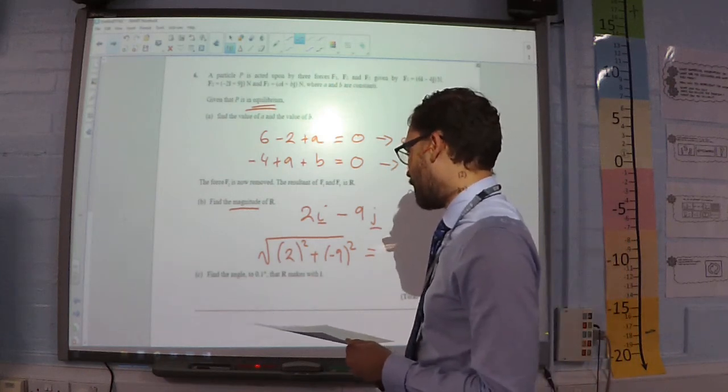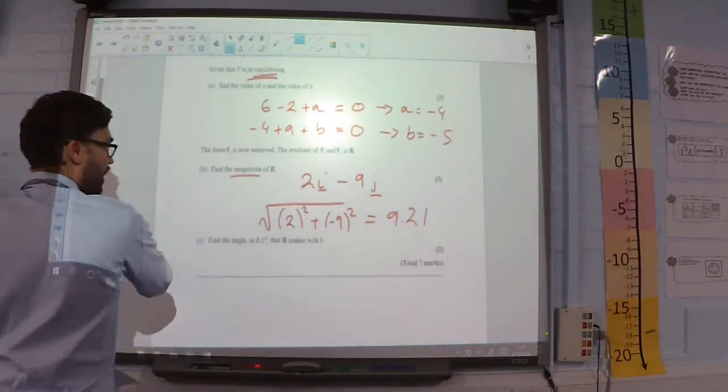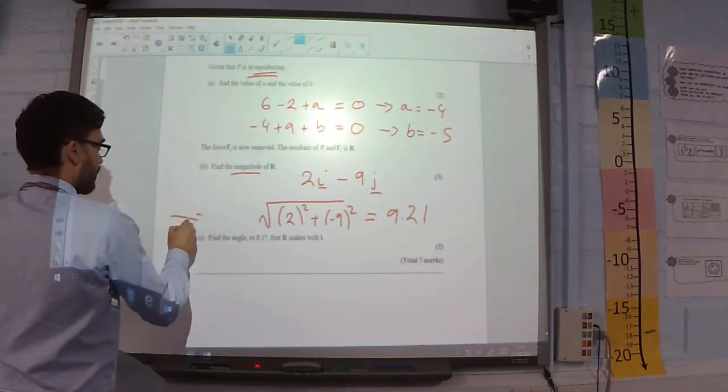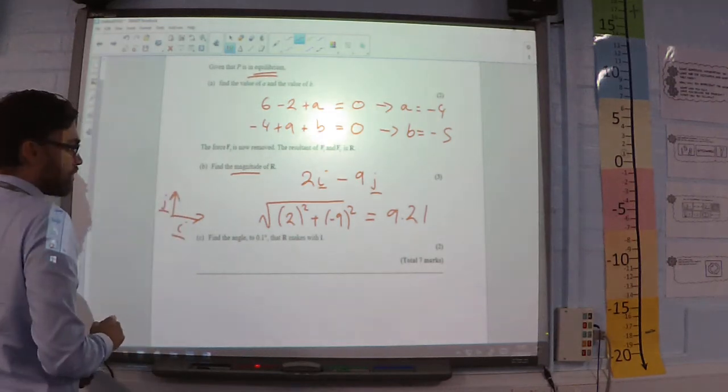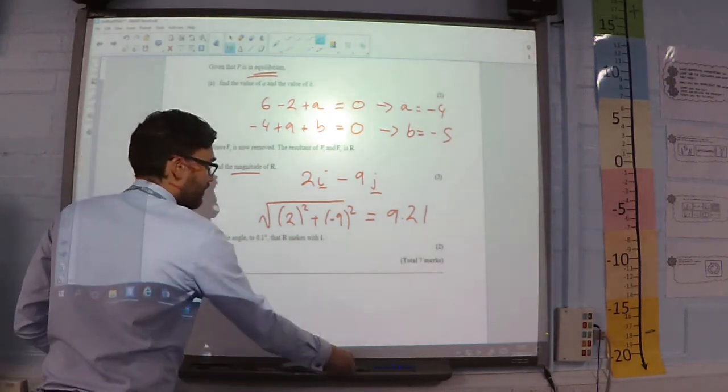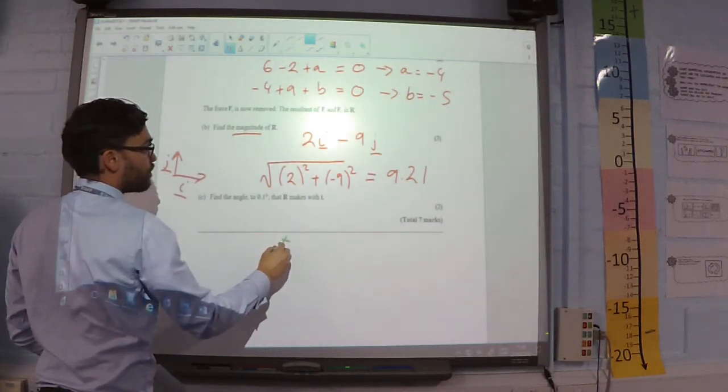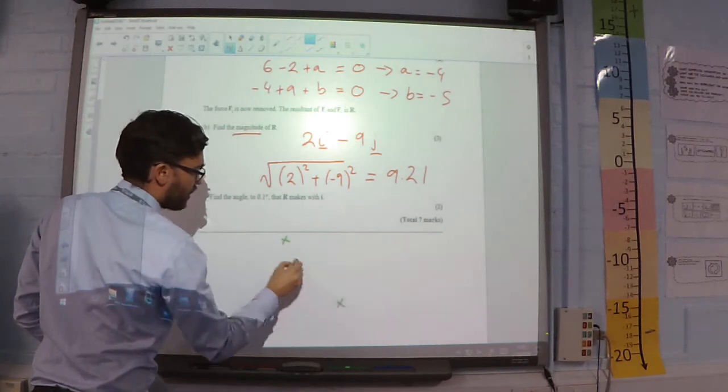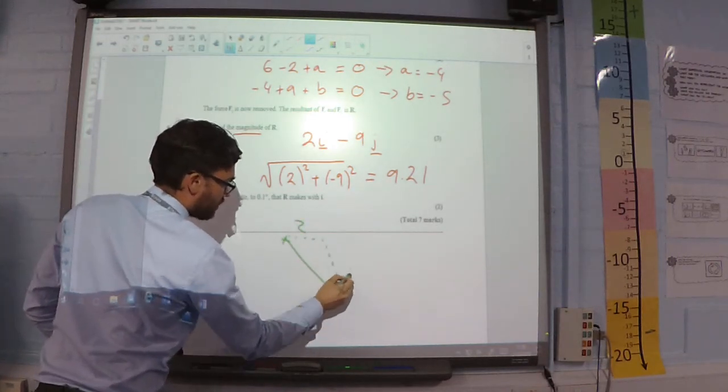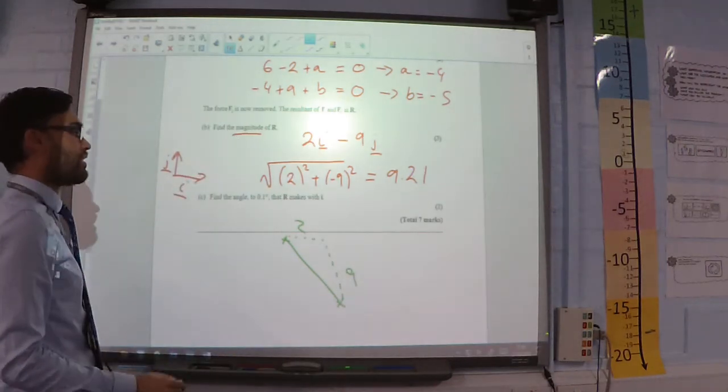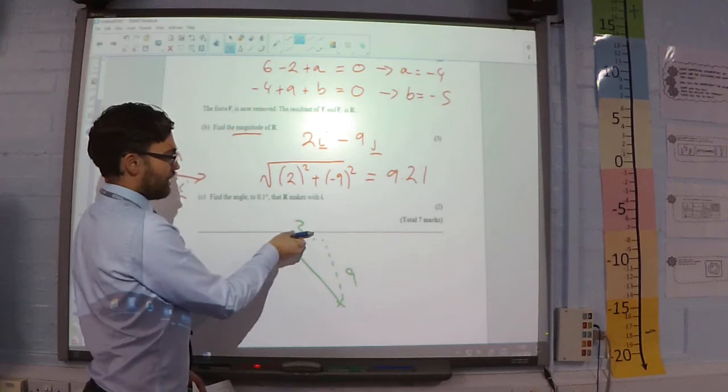Find the angle to 0.1 degrees. So, it's one decimal place that R makes with i. So, i is one to the right. j is one up. So, if we have a vector 2i minus 9j, that means that it goes 2 to the right and 9 down. So, that is our vector R. If we are working out the angle of this against i, we are asking what is that angle there.